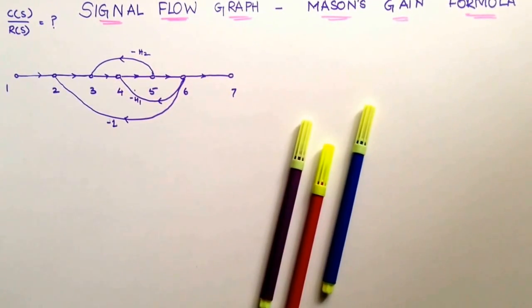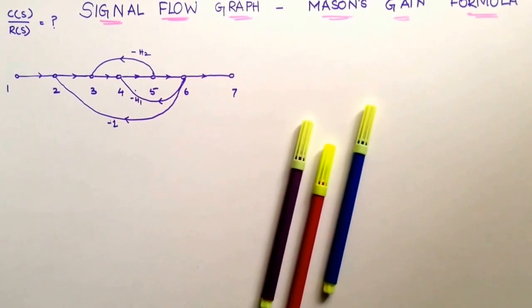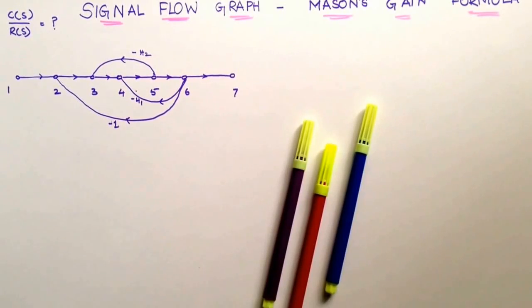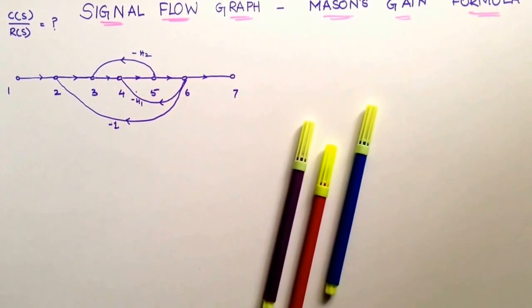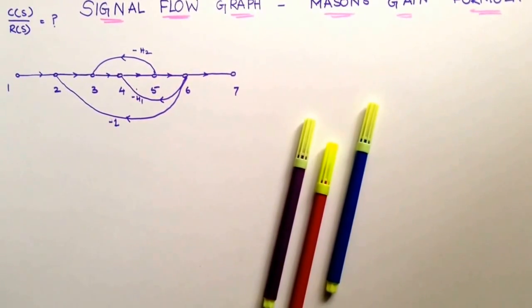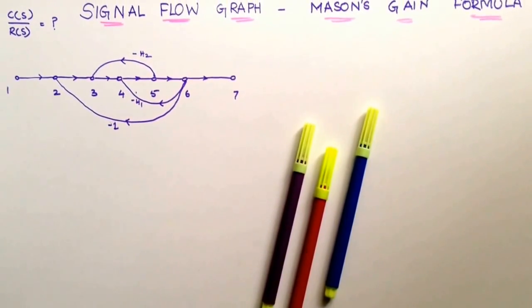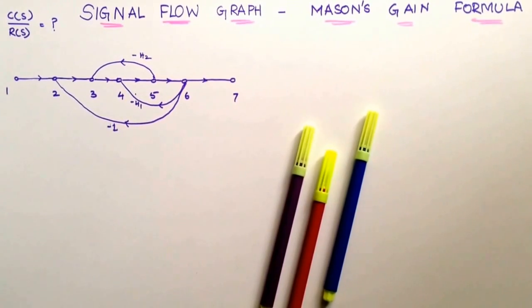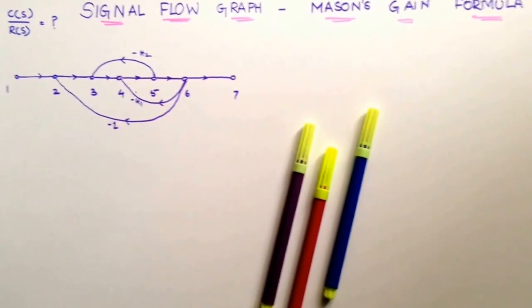Hello guys, hope you have been having a very lovely day. In this video we will see how to reduce the signal flow graph and find out the transfer function C(s)/R(s) using the Mason's gain formula.